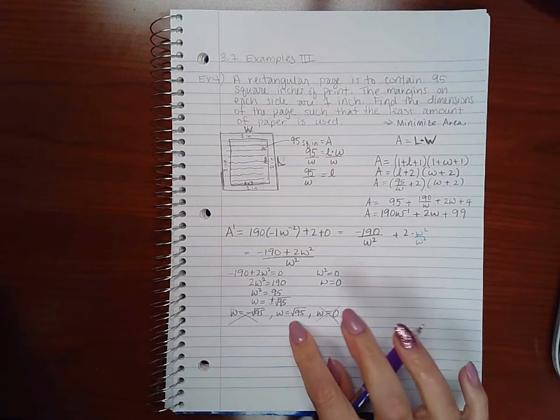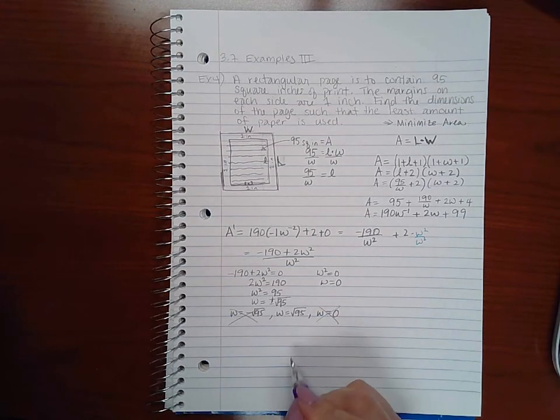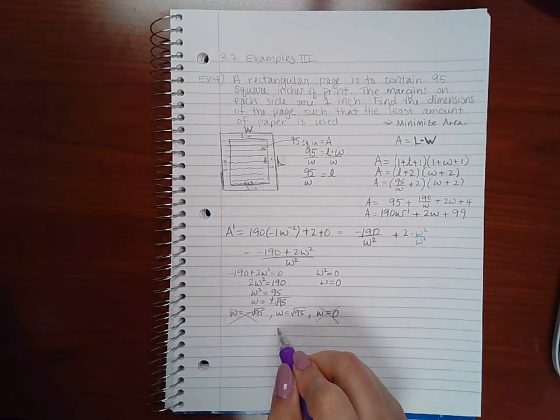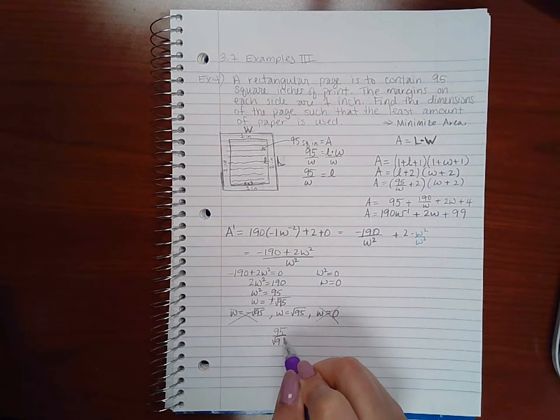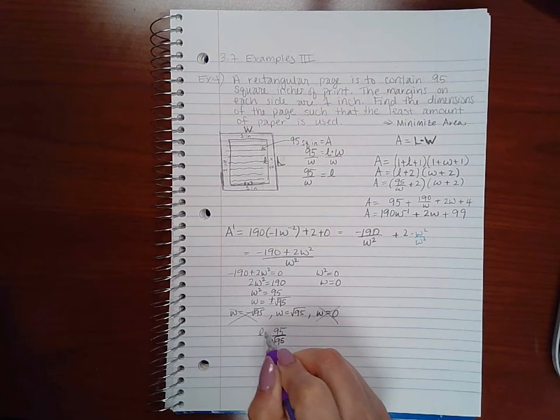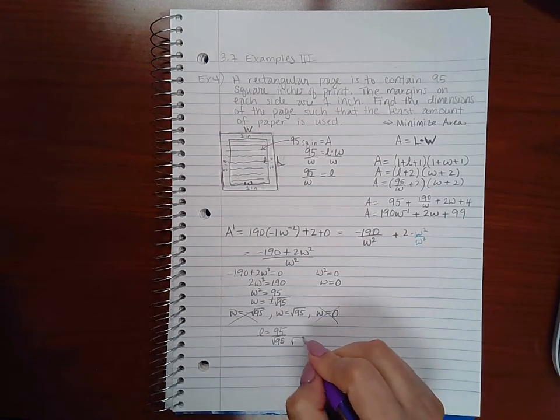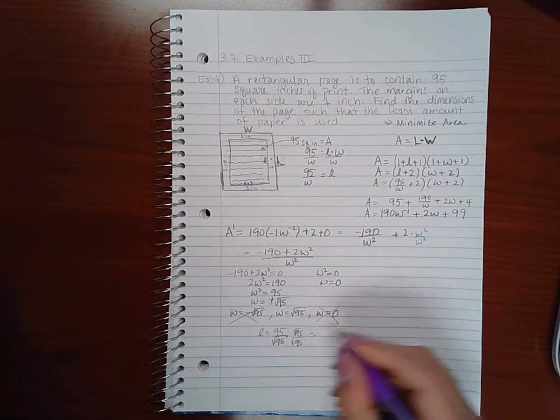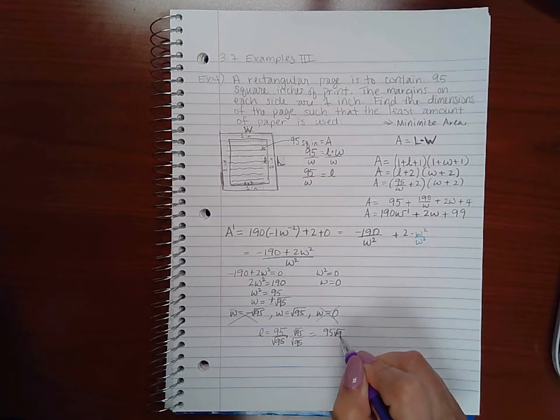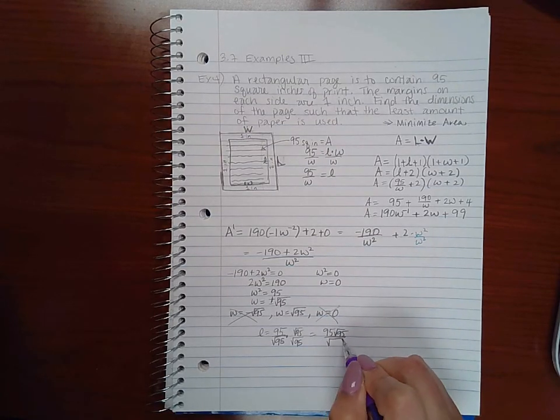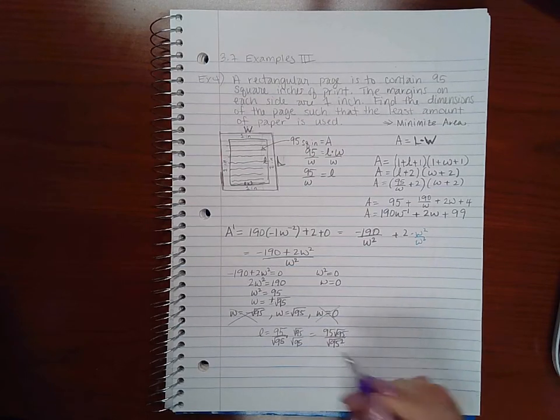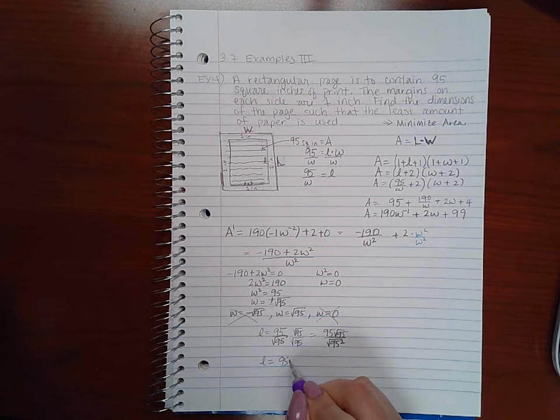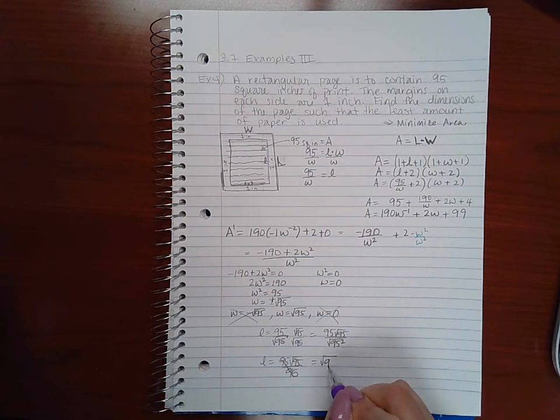So that's little w. If I want to find what little l is, I can plug it into this formula here. So 95 over square root of 95 will give me little l. I do have to rationalize these, I cannot leave them like that. So then I get 95 square root of 95 divided by the square root of 95 squared, which is just 95, divided by square root of 95 over 95, which is just the square root of 95.